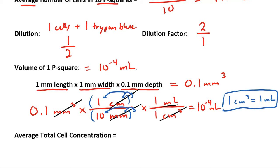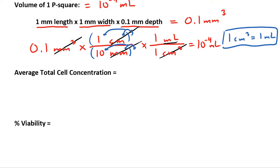So we have the average number of cells in 1 P-squared. We have the volume of 1 P-squared. And we have our dilution factor to work backwards to determine what the concentration was in our original test tube. So now we can determine the average total concentration of cells in that original test tube. So to do that, we take the number of cells in 1 P-squared. We divide by the volume of 1 P-squared. And we multiply by our dilution factor to convert the concentration on the slide to the concentration in the test tube. And we work that all out.